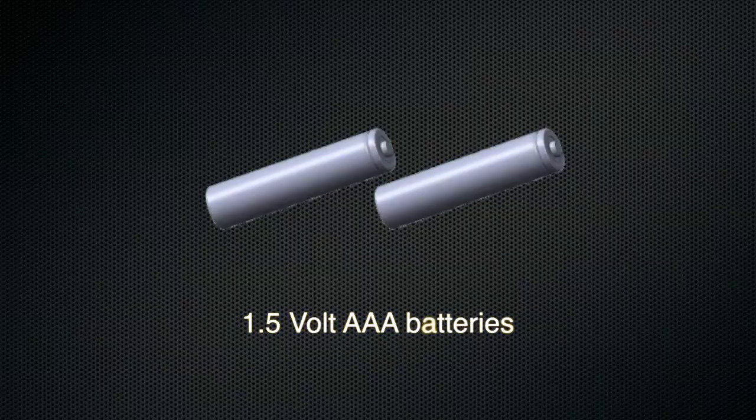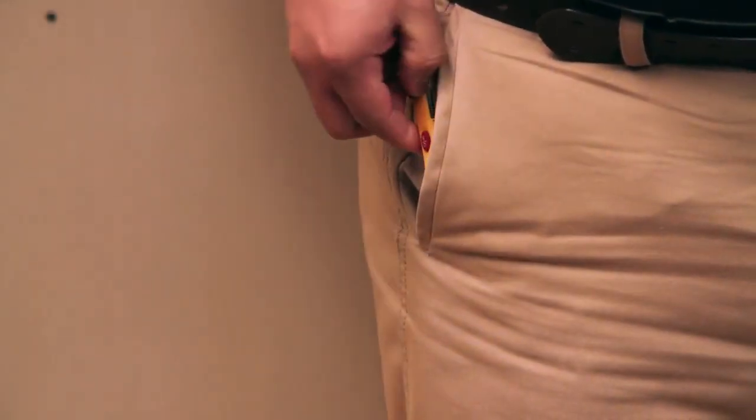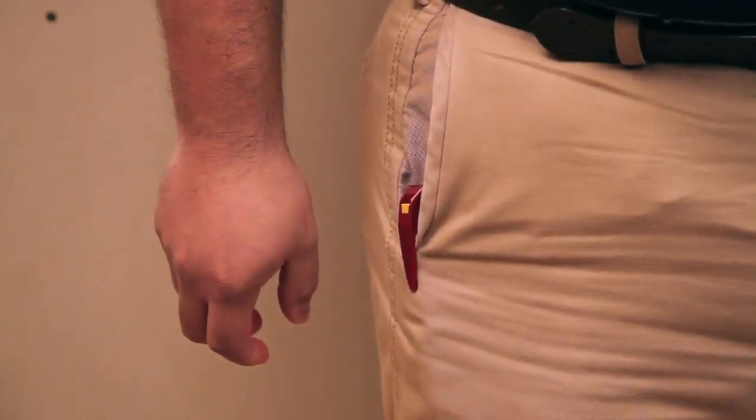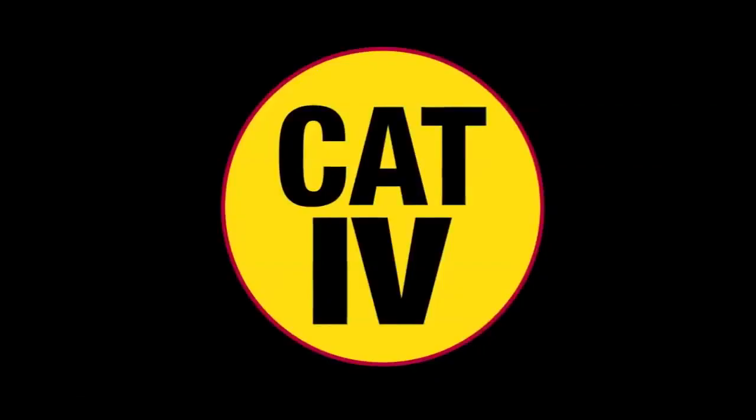The NCBT2 uses standard 1.5 volt AAA batteries and is equipped with an auto power off feature to conserve battery life. The handy belt clip lets you keep the tester close at hand. The NCBT2 is UL listed and Cat4 1,000 volt safety rated.